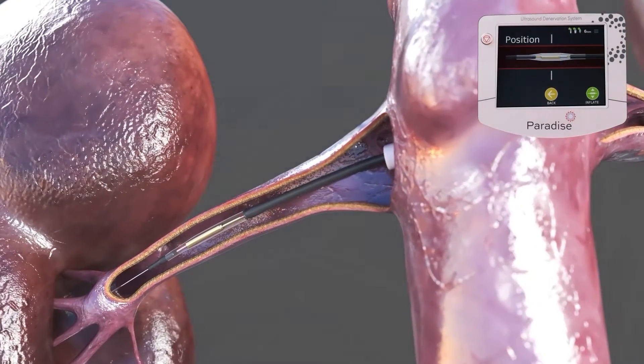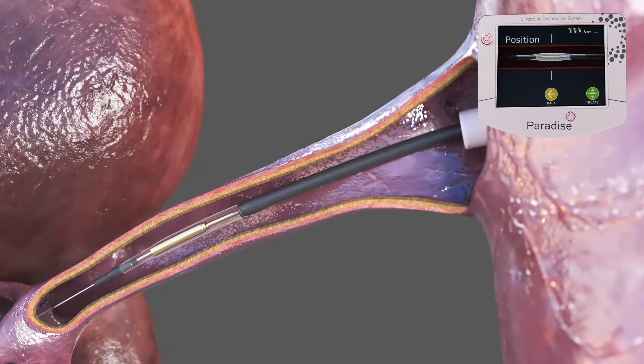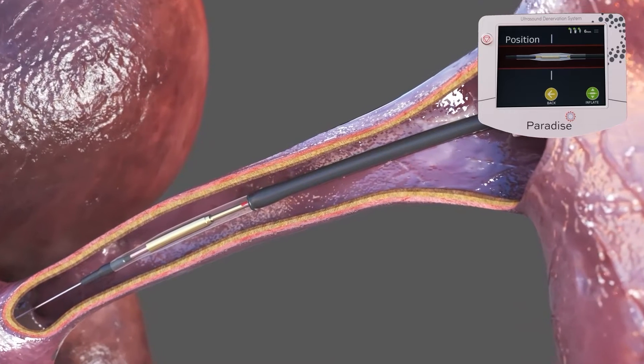The Paradise catheter is advanced over a standard guide wire and through a renal guiding catheter into the distal end of the main renal artery proximal to the distal branches.